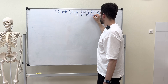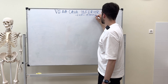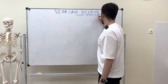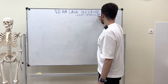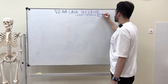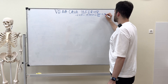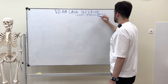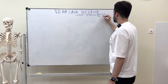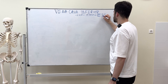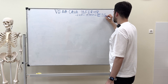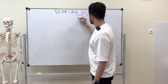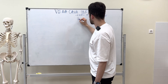It has two parts: an abdominal part and a thoracic part. The abdominal part is around 17 to 18 centimeters, and the thoracic part is around two to two and a half centimeters in length.